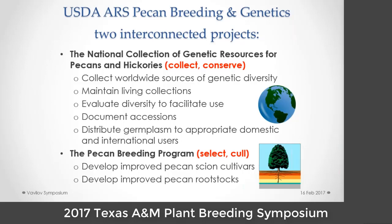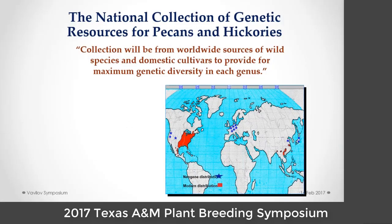We maintained living collections because this cannot be stored long term as seed. We try to evaluate diversity, document the accessions, and distribute germplasm to appropriate users. All of that germplasm is used in breeding. Our goal of collecting and conserving in the repository collection is matched in the breeding program, and we develop improved pecan scion cultivars and are charged to understand more about diversity so we can eventually help contribute to rootstock selection.